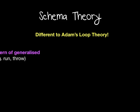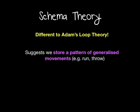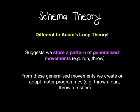Schema theory suggests that instead of storing one loop for every single skill that we do or learn, we store a pattern of generalised movements first — so running, throwing, catching, jumping, bounding, etc. And then from that generalised store, we create or adapt a motor programme from it.